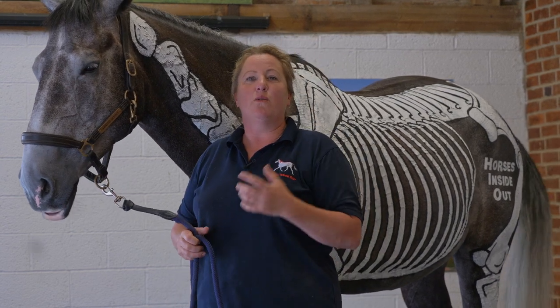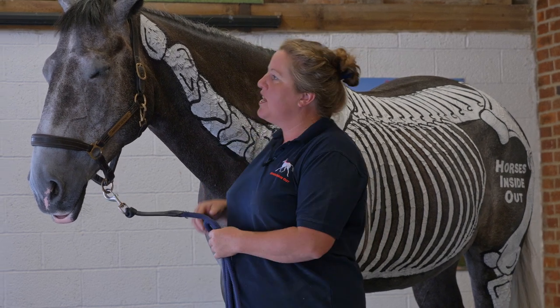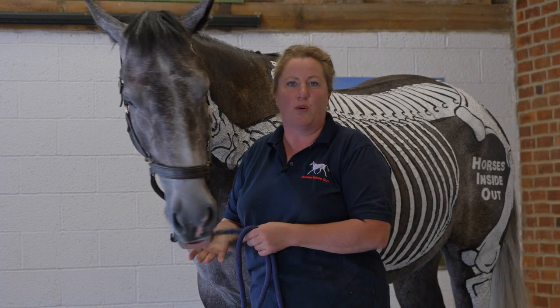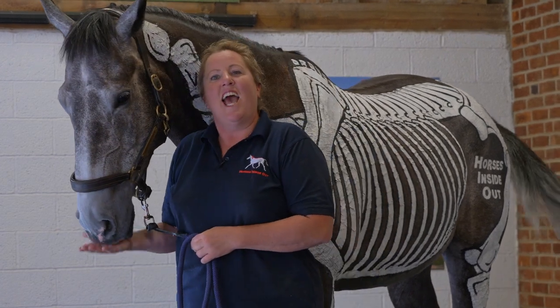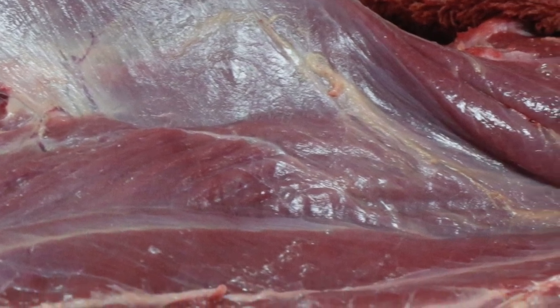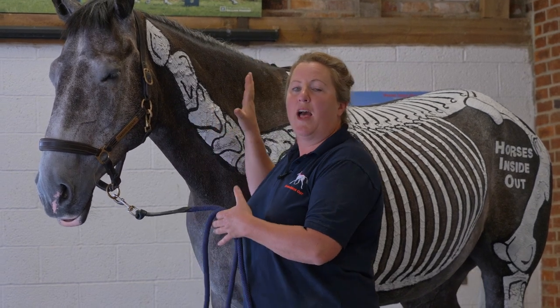And at the end of it, you're going to come away with really subtle yet powerful techniques for affecting the fascia throughout the whole of the horse's body. Having loads of different dissection photographs and videos really helps you to be able to visualize both the anatomy, the structure, but also helps with the techniques as well.